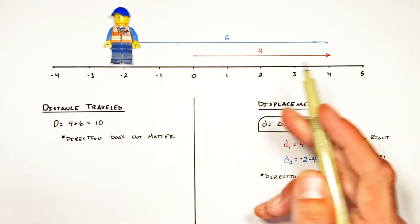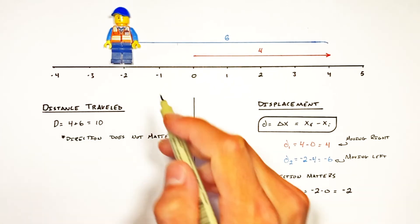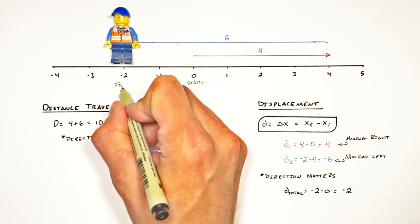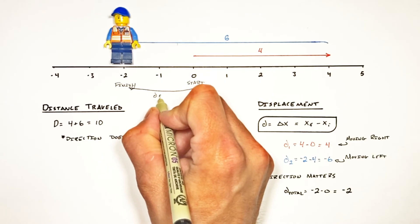That's here, negative two, minus the initial at zero. Leaving a total displacement of negative two. And ultimately this negative is simply telling us that the Lego dude finished two to the left of where he began.